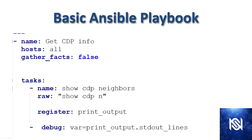Then we call the raw module, which runs the show CDP neighbors command on the devices, and then it prints the output to the register variable. For the most part, that's the basic structure. The playbook starts with the three dashes at the top, which contains plays. The plays have parameters and also define the set of hosts that we're going to be running it against, and the play also has one or more tasks in it.